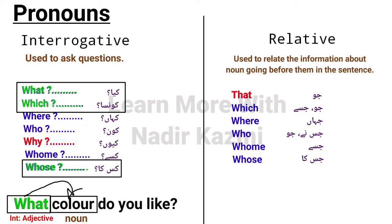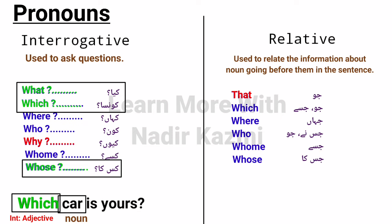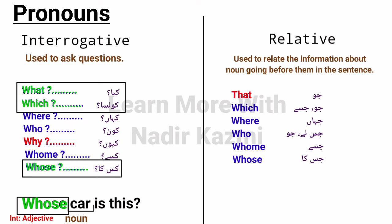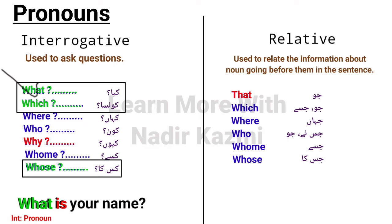When what, which, or whose are followed immediately by a verb (not a noun), they function as interrogative pronouns. For example: 'What is your name?' — here 'what' is followed by 'is' (a verb), so it is an interrogative pronoun. Only these three — what, which, whose — can also be interrogative adjectives. Remember: when they carry nouns they are interrogative adjectives; when they are followed by helping verbs, they are interrogative pronouns.